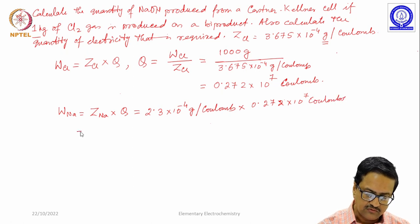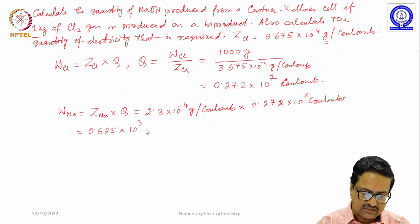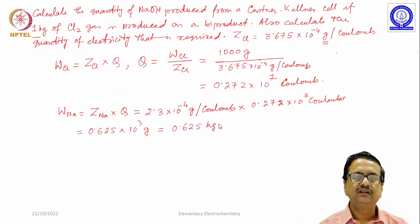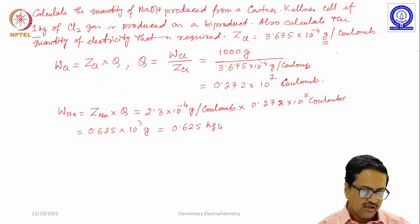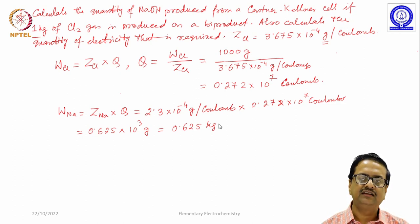When you do this multiplication you will get the number as 0.625 × 10^3 gram which essentially means 0.625 kilograms of sodium that will be produced when 1 kg of chlorine gas is produced at the anode chamber. Remember that there are 2 anode chambers, so this is the overall amount of chlorine gas produced at the 2 chambers.